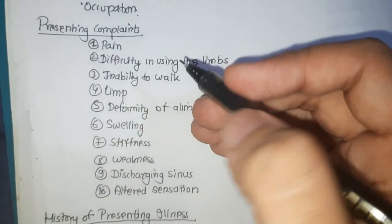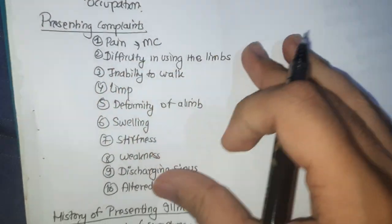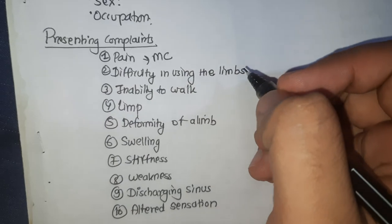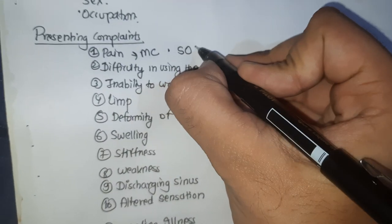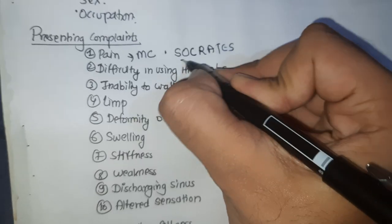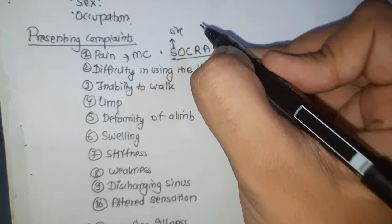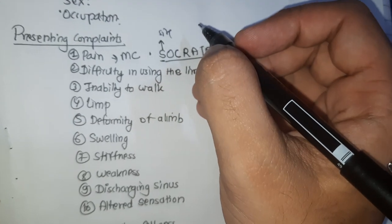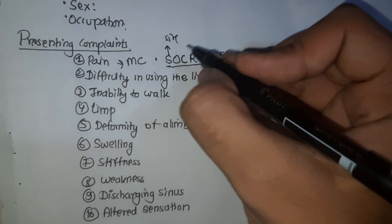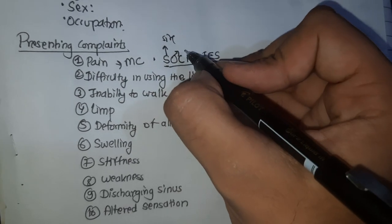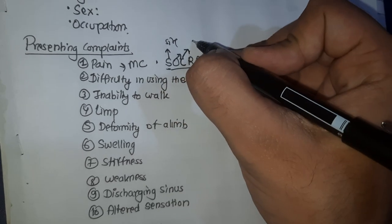Now we will elaborate the presenting complaints. First, talking about pain — pain is the most common symptom in orthopedics. The pain may be at the site of disease or it may be referred from another part. Details about pain can be elicited by the mnemonic SOCRATES. Site — what is the exact site of pain? We should try to be as specific as possible and ask the patient to point out the site. Onset — was the pain acute or chronic in onset?